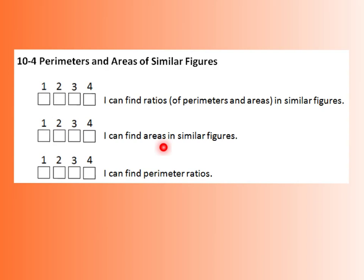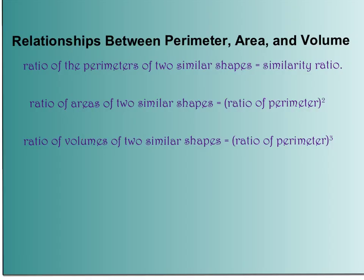We're going to look at how to determine area and find perimeter ratios. The first thing I have here is a list of three different relationships between perimeter, area, and volume. I'm including volume, however we won't see many practice problems with this, but it is important for the end of course exam.